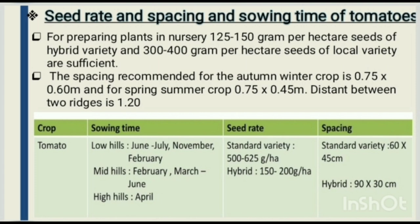Seed rate, spacing, and sowing time of tomatoes: for preparing plants in nursery, 125 to 150 grams per hectare seeds of hybrid variety and 300 to 400 grams per hectare seeds of local variety are sufficient. Spacing recommended for autumn-winter crop is 0.75 × 0.60 meter, and for spring-summer crop 0.75 × 0.45 meter. Distance between two ridges is 1.20 m. Sowing time — low hills: June to July, November, and February; mid hills: February, March to June; high hills: April. Seed rate for standard variety is 500 to 625 grams per hectare, and for hybrid variety 150 to 200 grams per hectare.